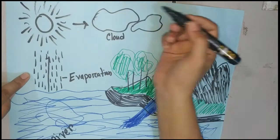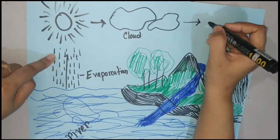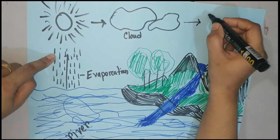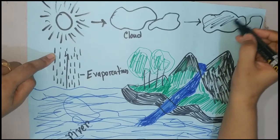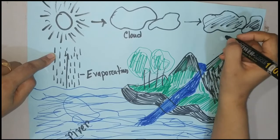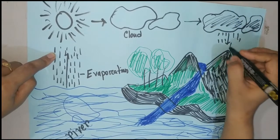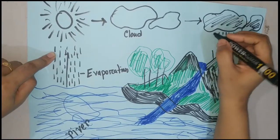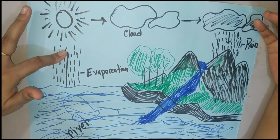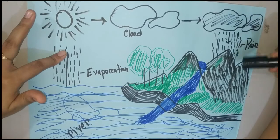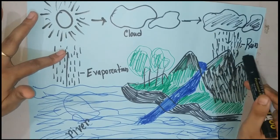When this cloud goes further, the water drops become heavier and they can't hold those drops. When the cloud cools further, the drops become heavier and it falls in nature as rain. Look here — it's raining. When it rains, the water drops fall in nature as rain.